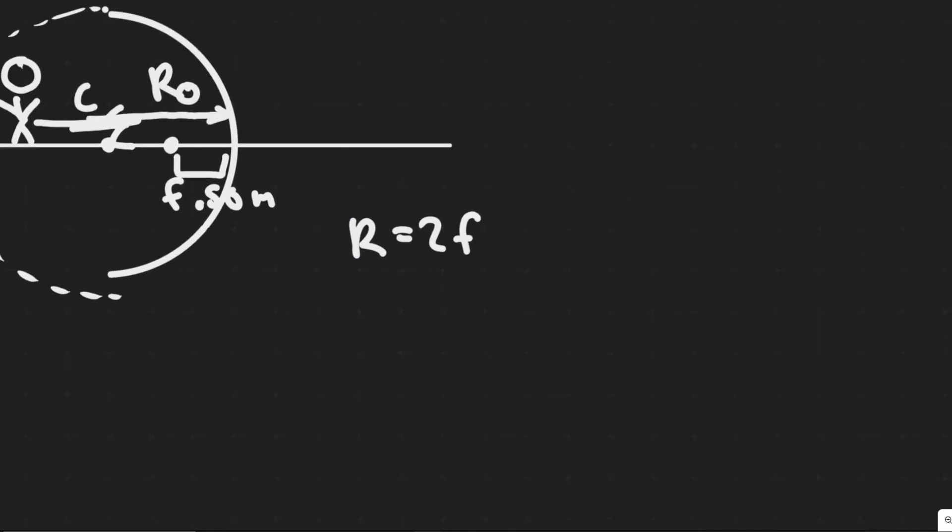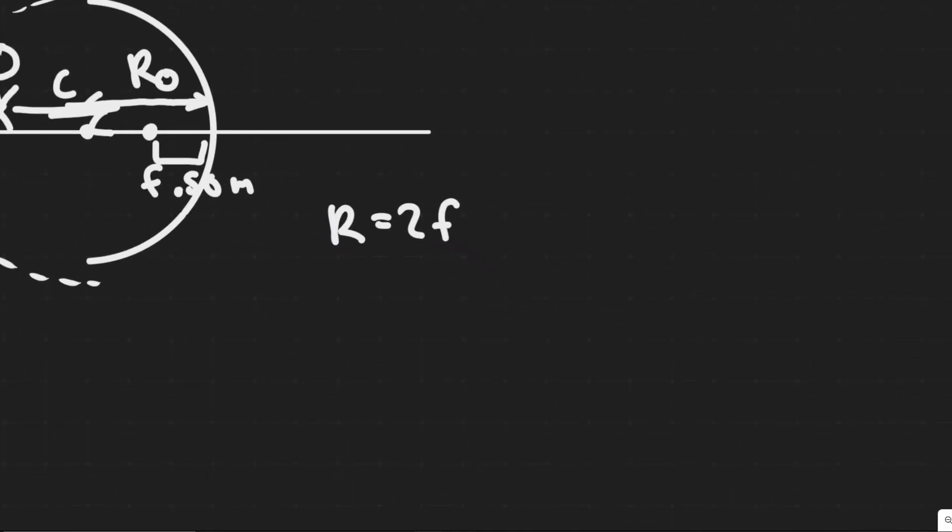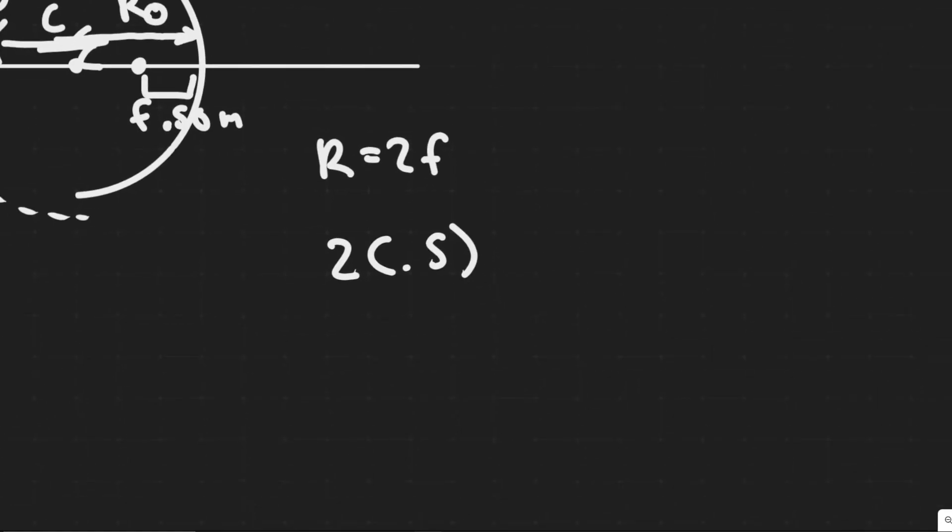The focal point is always defined as half the distance of the radius. Now that we know the focal length is 0.5 meters, the radius is 2 times 0.5, which is equal to 1, so just 1 meter.